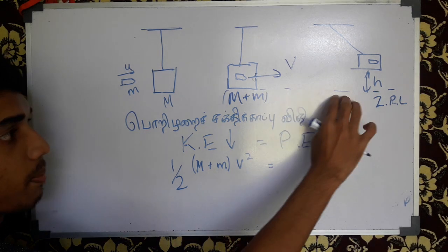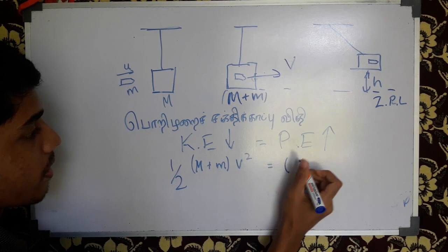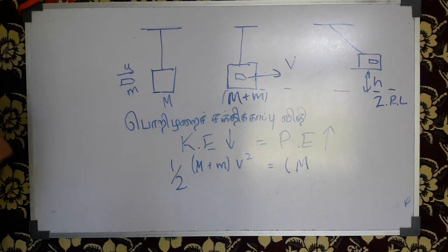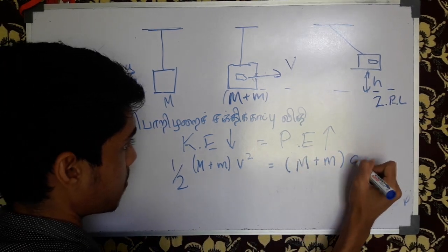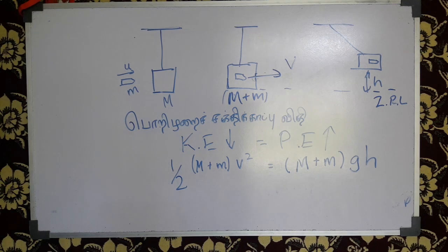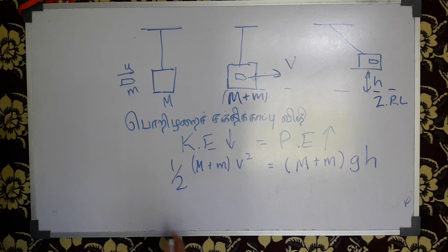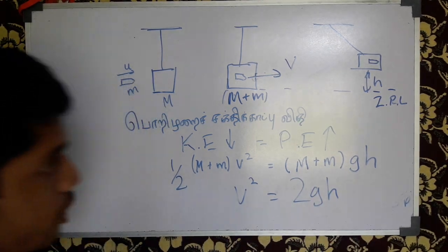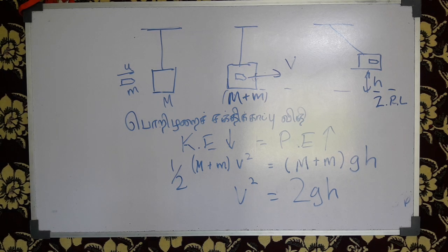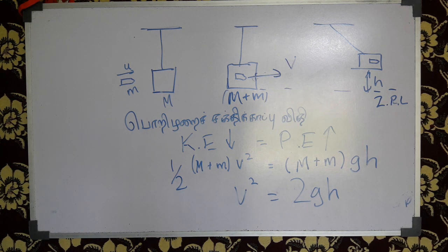This is the first step: potential energy is zero at the potential level. This is how we are going to do this. This is M plus M into G into H-i. We will write this as U into H.